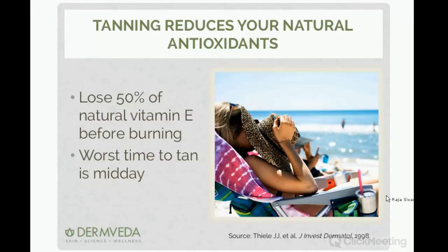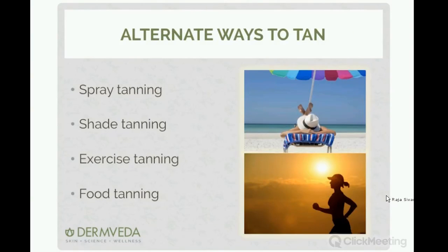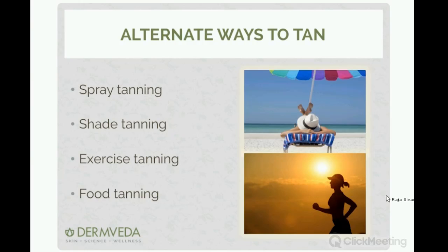The worst time to go tanning is midday — avoid being out in the midday sun to tan. You don't need much sun exposure to produce vitamin D, and sunburning definitely doesn't help. There are alternate ways to tan: spray tanning is an excellent option — a substance is sprayed on the skin that reacts with the skin's surface to give a glow. The technology has improved from the old orangish results, and salons now offer refined options with more natural-looking colors.